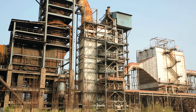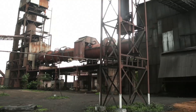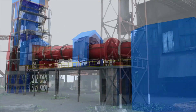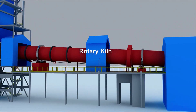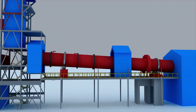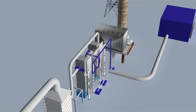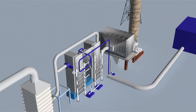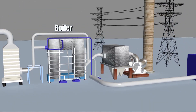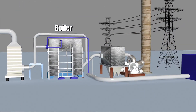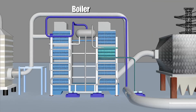To understand the power generating process, let us consider a 4 megawatt power generating unit. The rotary kiln generates waste or flue gases, which then enter the boiler. The boiler is a bi-drum water tube structure.